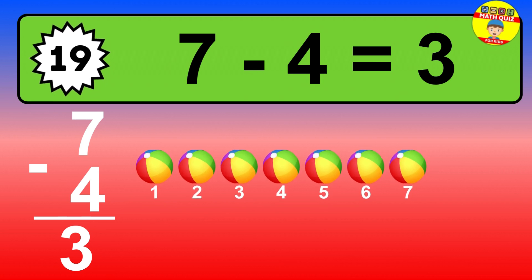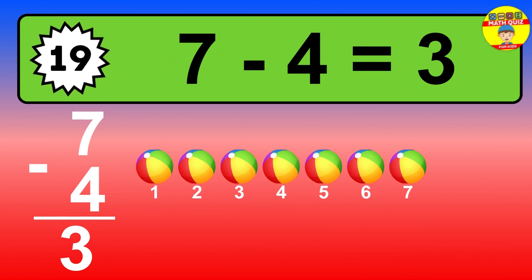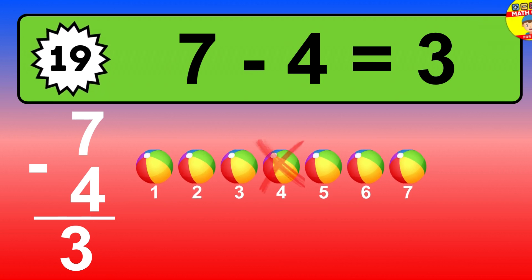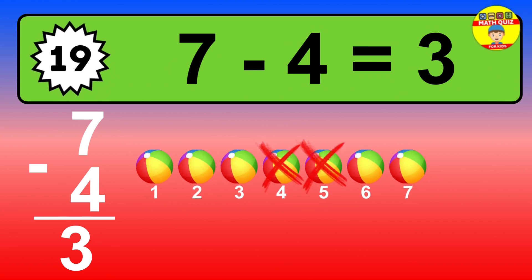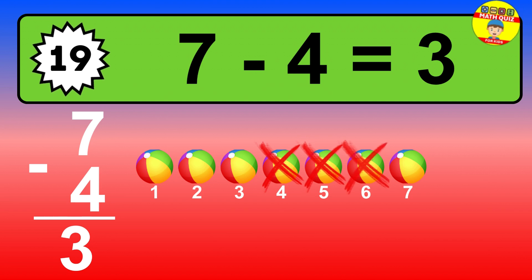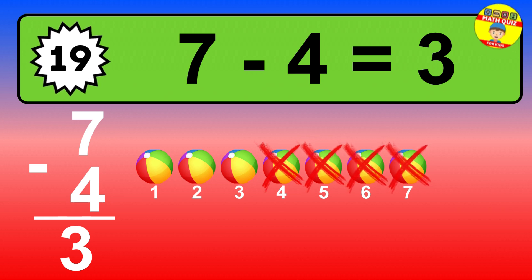Question 19. 7 minus 4 equals what? So the answer is 7 minus 4 is 3. Let's count it.